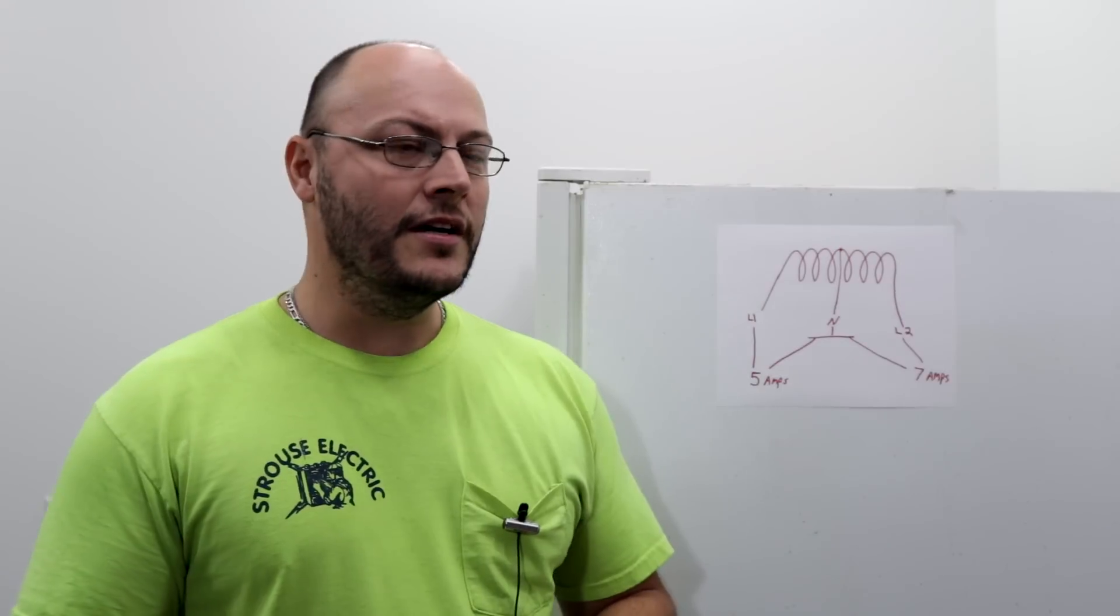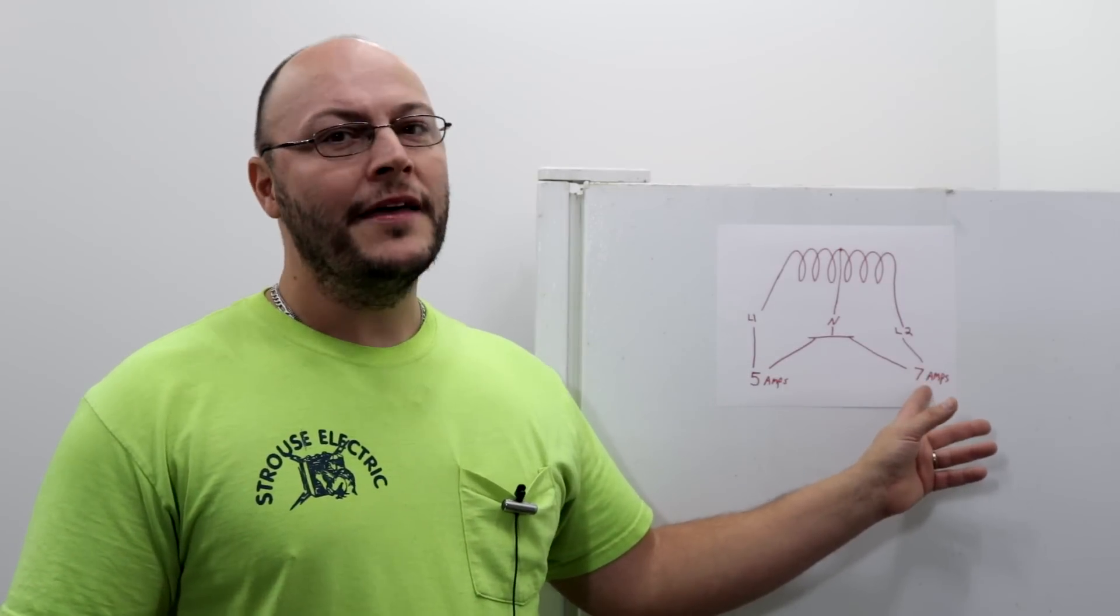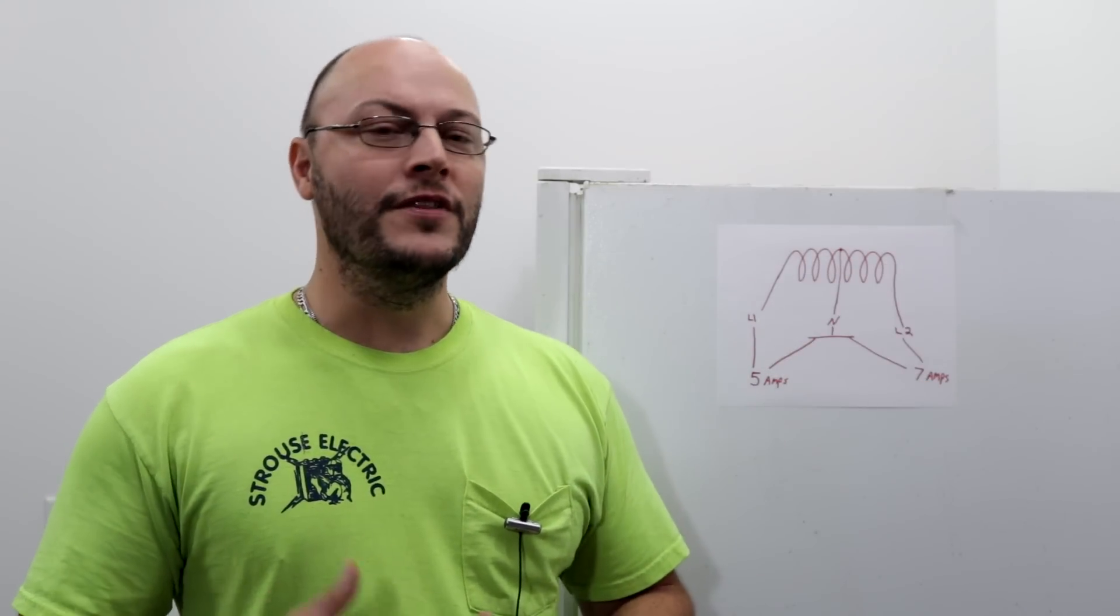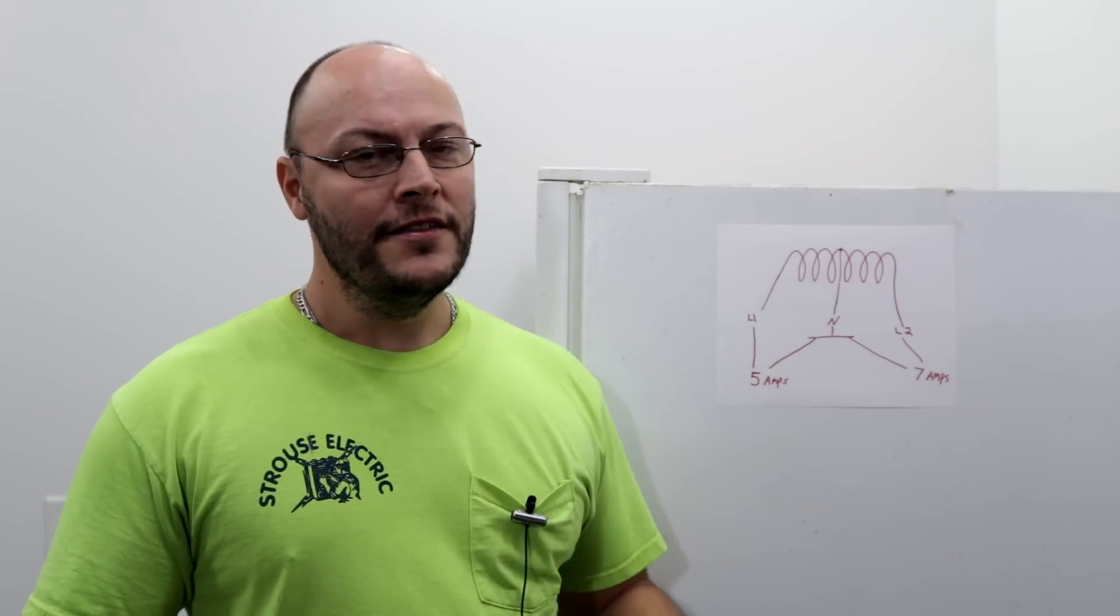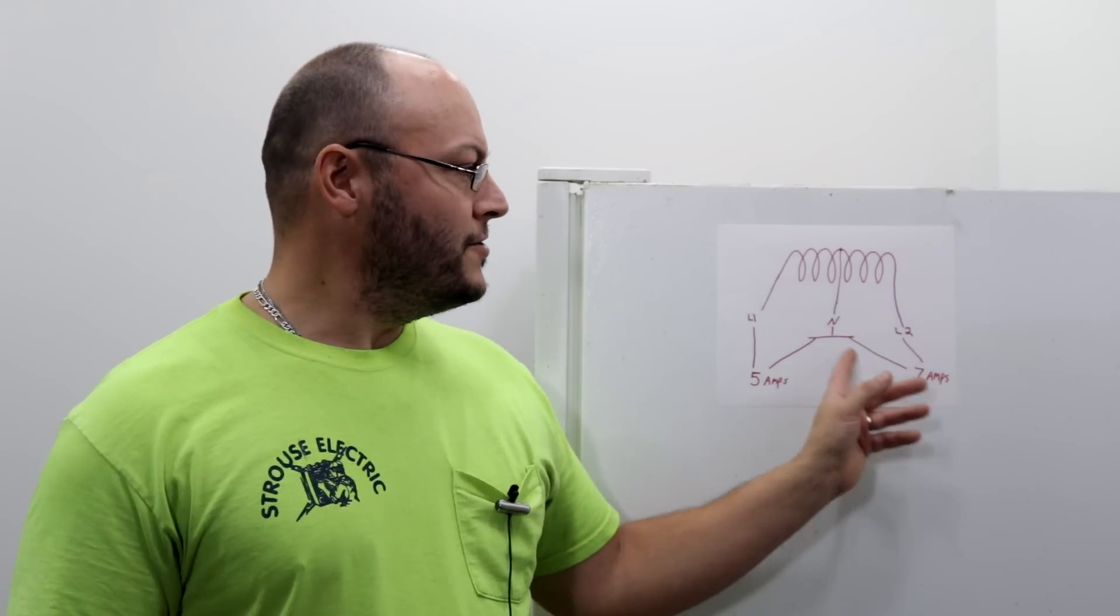What it actually does is it provides a path back to the transformer for the unbalanced portion of the load. So you have five amps here and seven here - that's a difference of two. So basically two amps of current is going to run through the neutral back to the transformer.